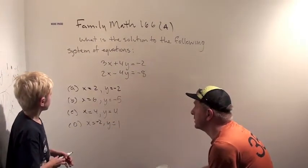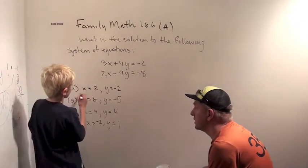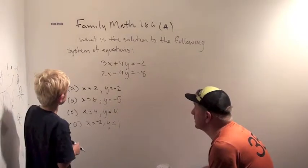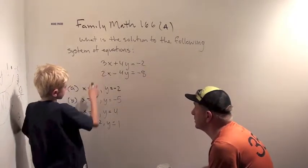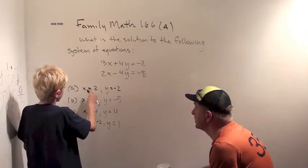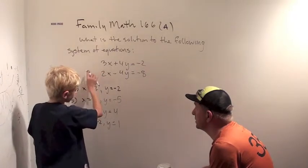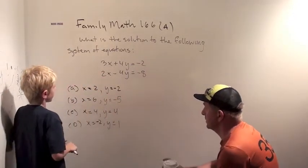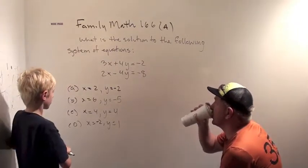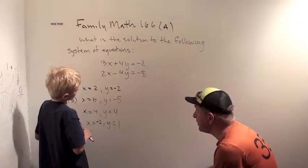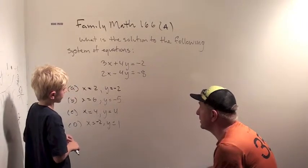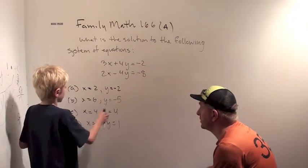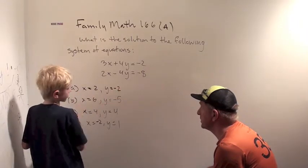Well, we haven't really talked about this stuff, but I'm going to try these out. Okay. Well, 2 times 3, so 6 and minus 24 now. This one doesn't work. Okay.